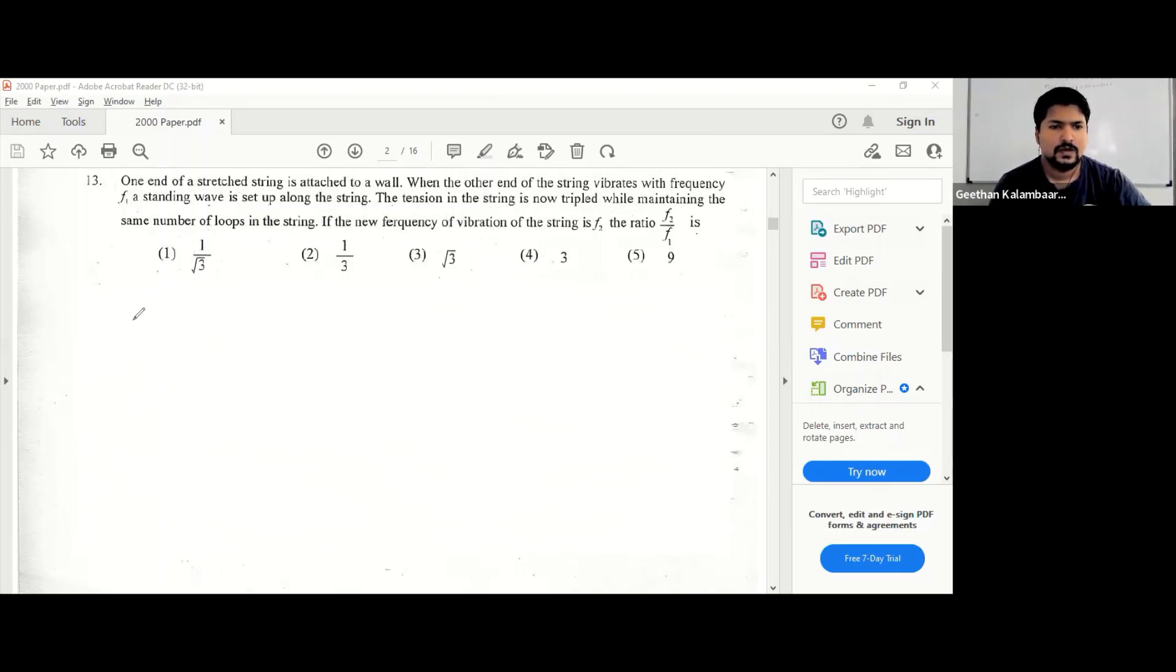So the difference is that you triple the tension. The tension here in this one is t, and the tension on the other one is 3t.